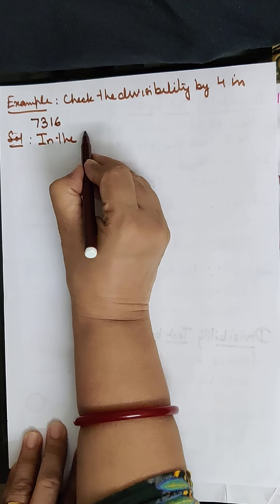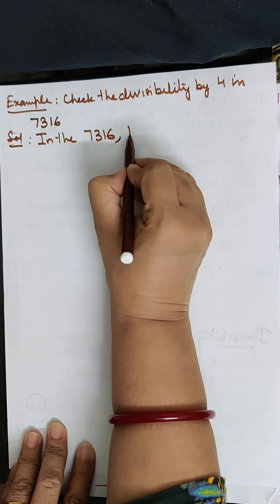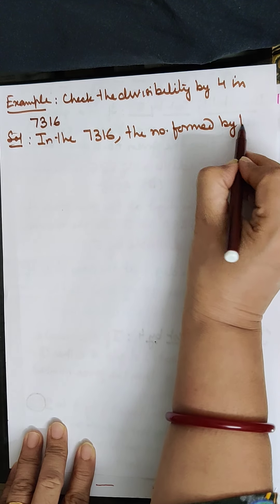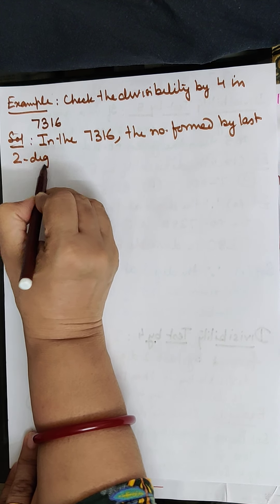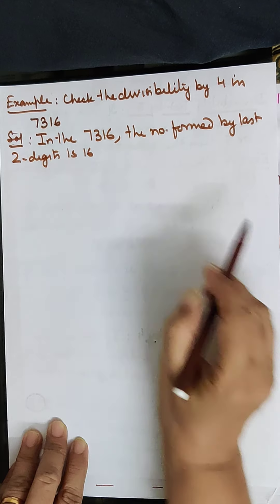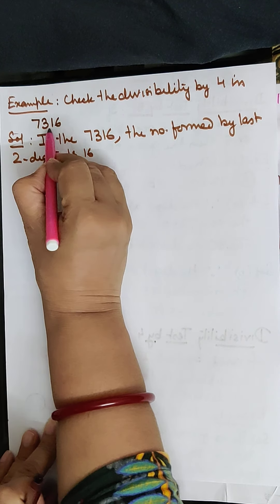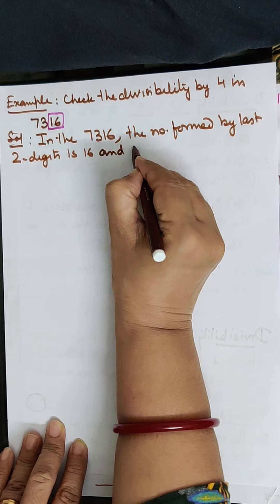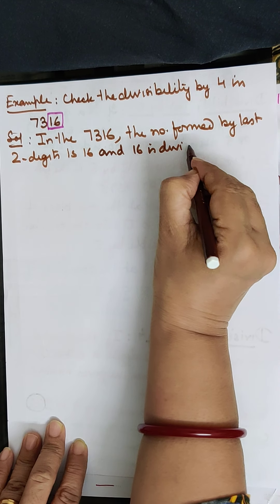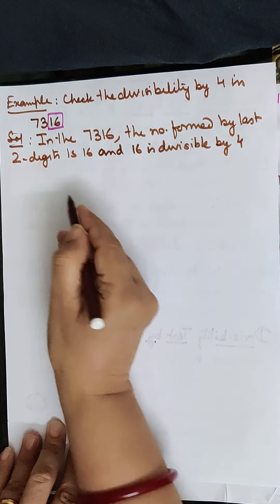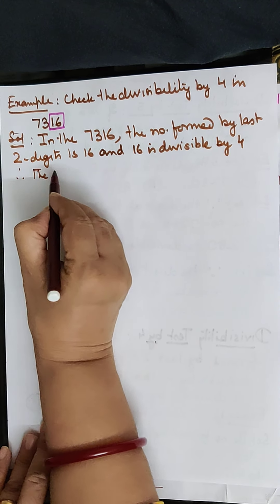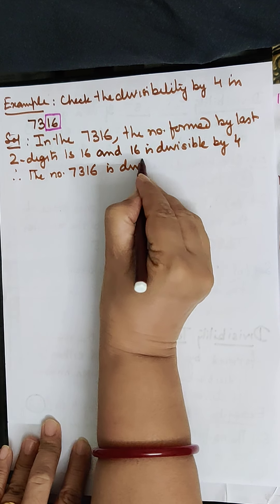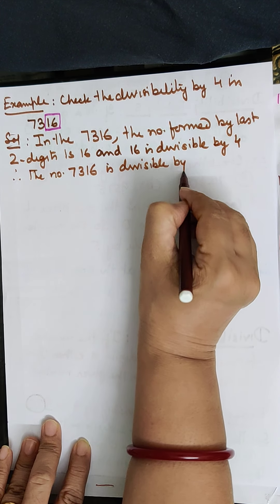Now one more example. In the number 7316, the number formed by the last two digits is 16. And 16 is divisible by 4. Therefore, the number 7316 is divisible by 4.